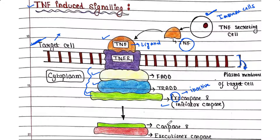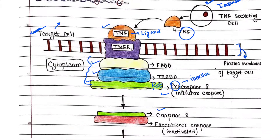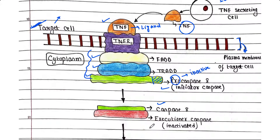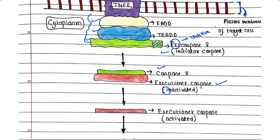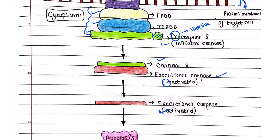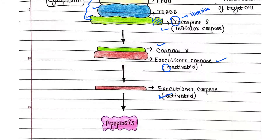Pro-caspase 8 is named 'pro' because it is inactive when bound to the complex. Once activated, a particular part of pro-caspase 8 is cleaved, and it becomes active caspase 8. This caspase 8 then binds the executioner caspase, which is also initially in an inactivated form. Upon binding, the executioner caspase becomes activated and breaks down downstream proteins, continuing the apoptosis process.